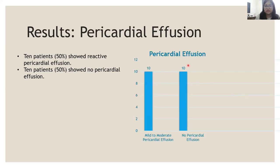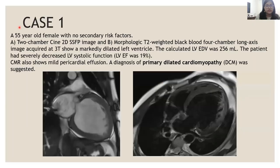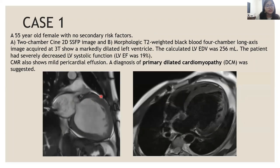10 patients had pericardial effusion and 10 did not. Our first case is a 55-year-old female with no secondary risk factors. The 2-chamber cine and T2 dark blood images showed a markedly dilated left ventricle with a left ventricular end-diastolic volume of 256 ml. This patient had severe systolic dysfunction with an ejection fraction of only 19%, with associated mild pericardial effusion. A diagnosis of primary dilated cardiomyopathy was suggested.